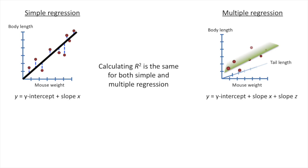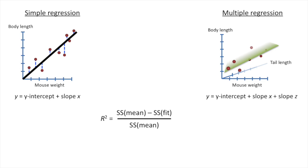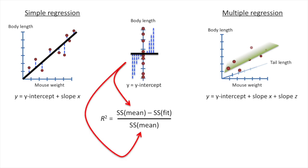So from the StatQuest on linear regression, you may remember the first thing we did was calculate r-squared. Well, the good news is calculating r-squared is the exact same for both simple regression and multiple regression. There's absolutely no difference. Here's the equation for r-squared, and we plug in the values for the sums of squares around the fit, and then we plug in the sums of squares around the mean value for the body length. Regardless of how much additional data we add to our fancy equation, if we're using it to predict body length, then we use the sums of squares around the body length.